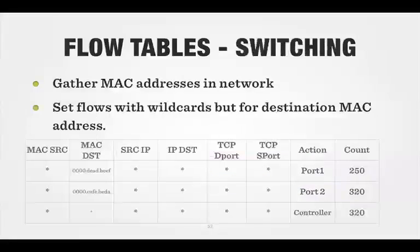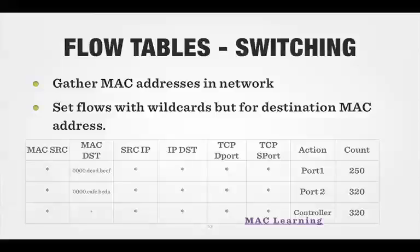Let's do the same thing with switching. To do this, we would need all the MAC addresses in the network. But we can set flows with wildcards except for the destination MAC address — and that's what switching is: switching on destination MAC address. For any MAC source, MAC destination of DEADBEEF, send it out port 1. For MAC address CAFBEDA, send it out port 2. For any other frame where we don't know the source or destination, send it to the controller so that the MAC address can be learned.